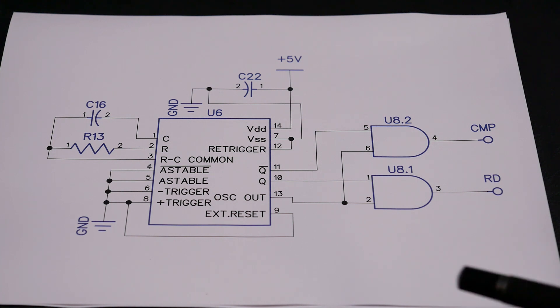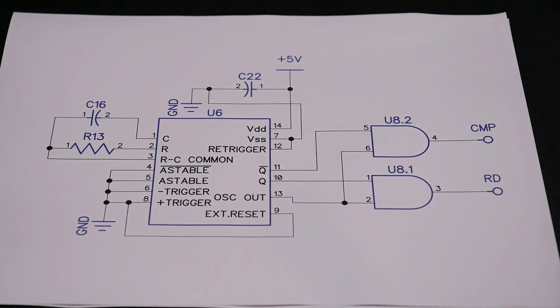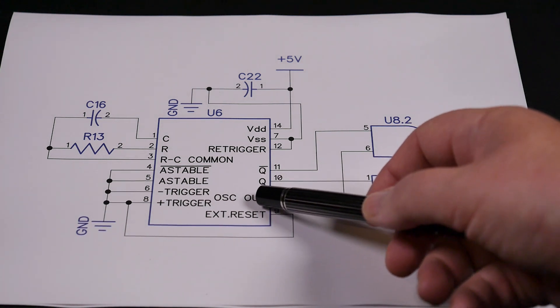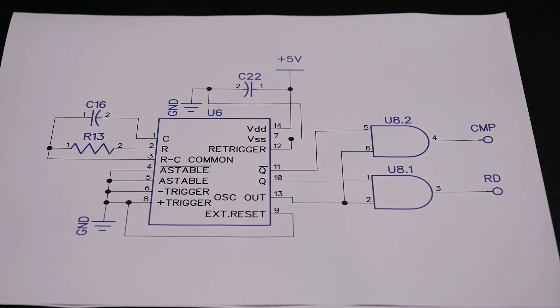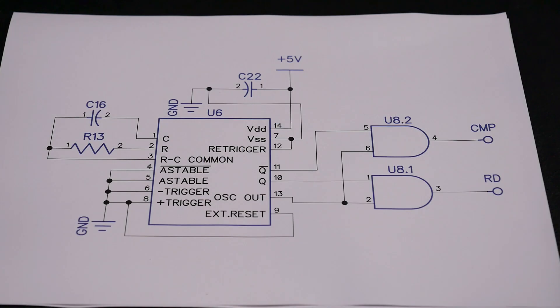Great, except that flip-flop takes time to change state, and so we see the oscillator out go high momentarily before our Q output goes low, and therein lies the problem.